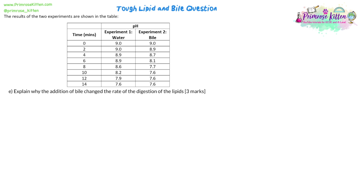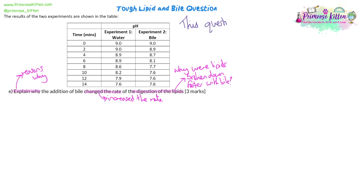The last question: explain why the addition of bile changed the rate of the digestion of lipids. It doesn't say in the question how the rate changed, but we know from the previous question that the rate increased. So we need to explain why the lipids were broken down faster when bile was present versus when it wasn't. This question is essentially just asking you what bile does — it's a knowledge question.